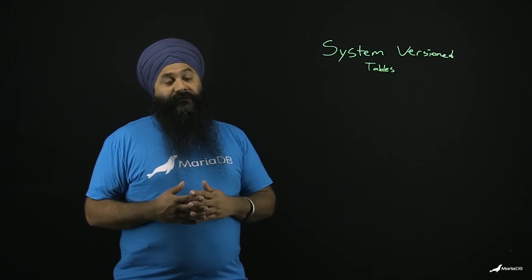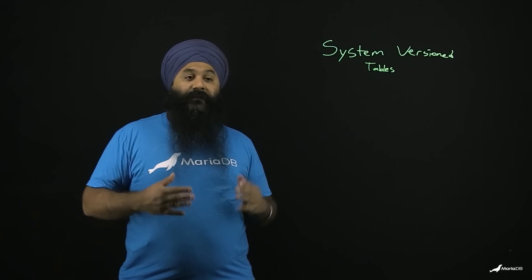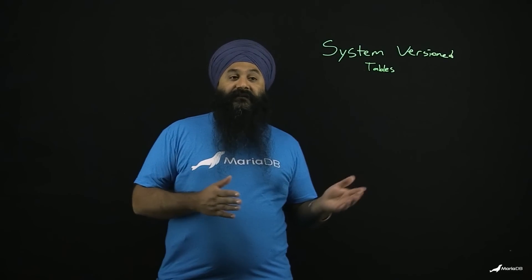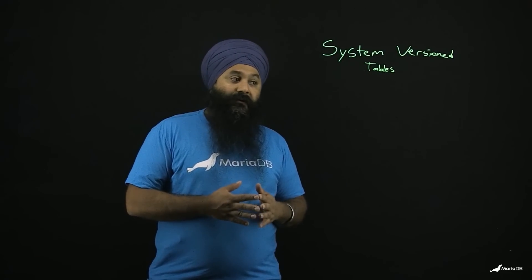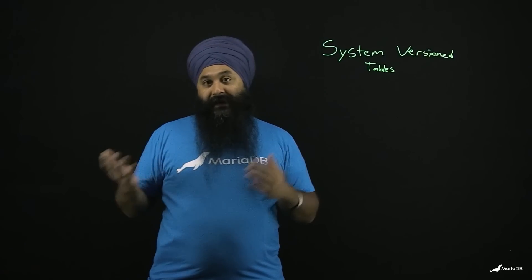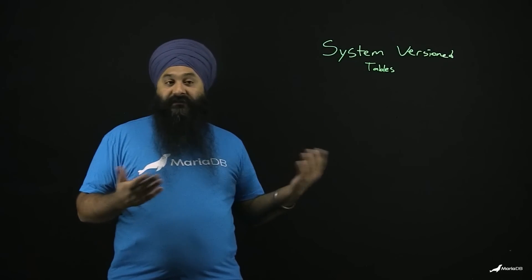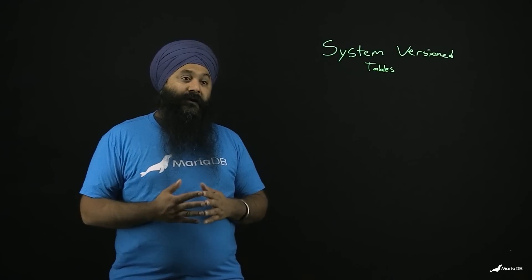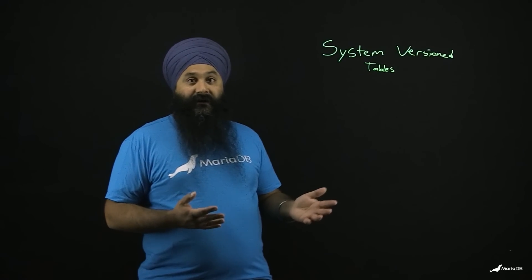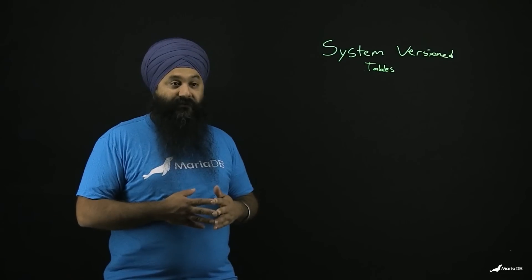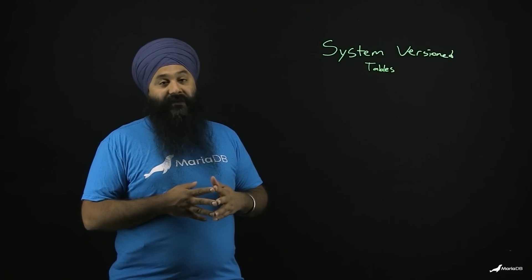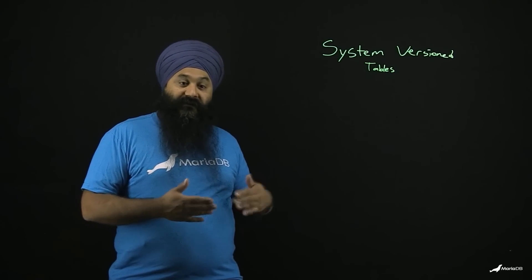What is a system versioned table? It's a table with some special attributes that allow you to see what it looks like throughout its history. For example, what did this table look like last year? What did it look like a month ago? Maybe five years ago. You can see what that data looked like when it was in the table, regardless of any inserts, deletes, updates, or any other writes that may have happened to the table since that time.